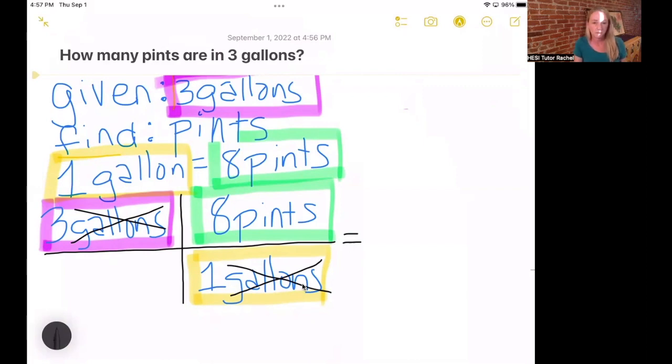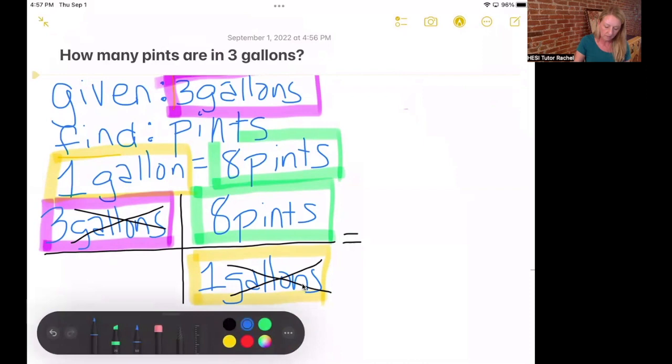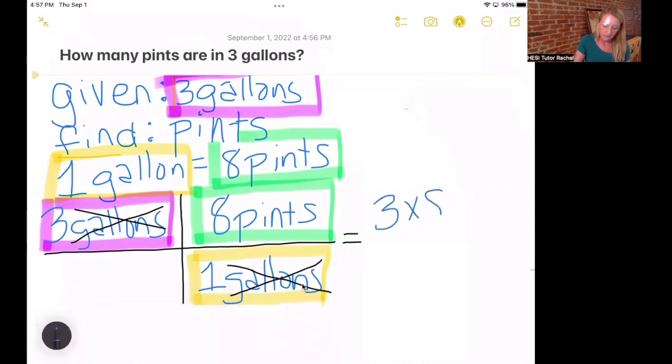And what you do with those numbers is that everything across the top is multiplied by each other. So that becomes three times eight. And then it's divided by everything on the bottom. If we had more than one number on the bottom, we would multiply them by each other as well. But since we don't, we just bring over the one. And then whatever any units that we have left or any words that we have left, just get carried out here. And so then we can just solve this. Now it becomes a very basic math problem. Three times eight divided by one. And you can always use your calculator if you want to. And that is 24 pints. And that is the solution to how many pints are in three gallons, 24.